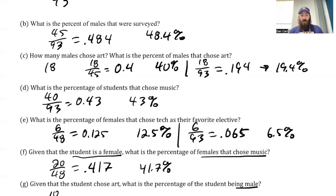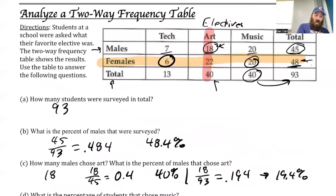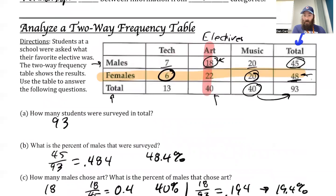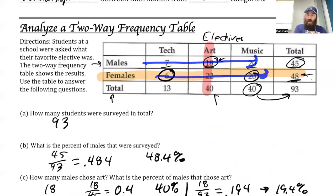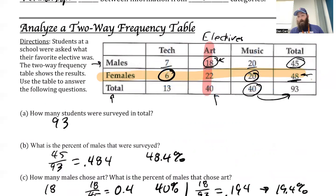So that is how we analyze this. One of the things I really want to highlight — we look at the total column here, and these numbers come from totaling in this direction. We add all those up to get to these two totals, and then we can add those up to get to the 93. Same thing going down the columns — we add up the columns to get to those numbers, and then we can add across, and it should still be the same number of 93.